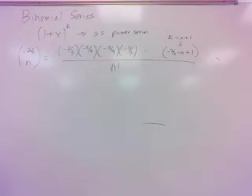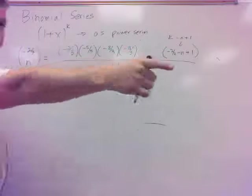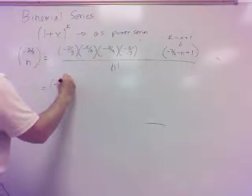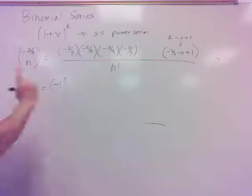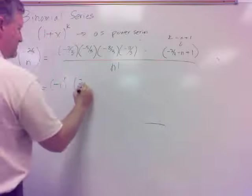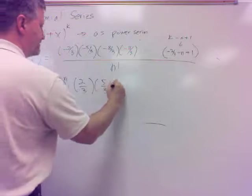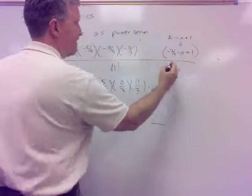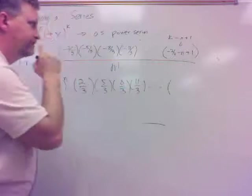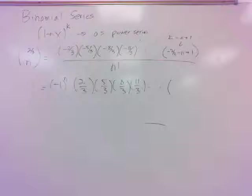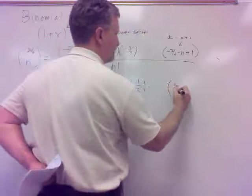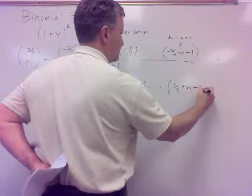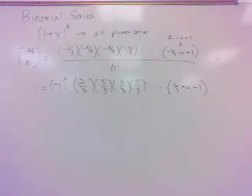Well, I can do the same thing here. Pull off a negative 1 off of each of those. So I have a negative 1 to the n. But now let's do it in two steps. 2 thirds, 5 thirds, 8 thirds, 11 thirds, until I have. Now, then over here, I can, hmm, what's that going to be? Positive 2 thirds plus n minus 1, which is n minus 1 third.